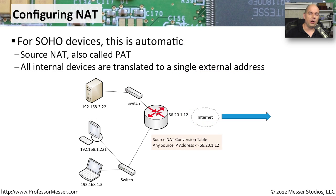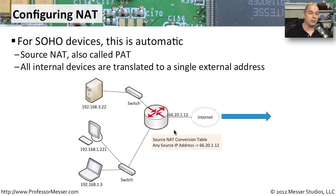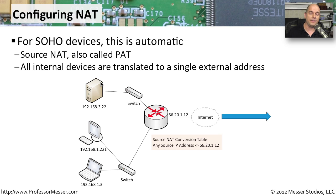Every wireless router for your home or small office is going to use NAT — Network Address Translation — which is automatically built into these devices. You may also see this referred to as Source NAT or Port Address Translation (PAT). It effectively takes the single IP address provided by your ISP and allows you to put multiple devices on your network, all communicating out to the internet through that single address.